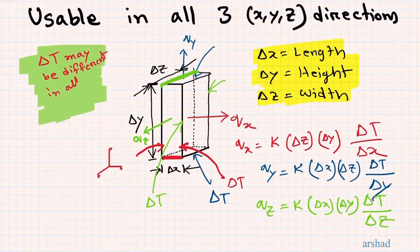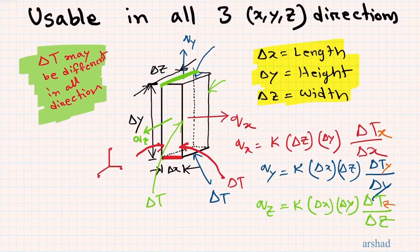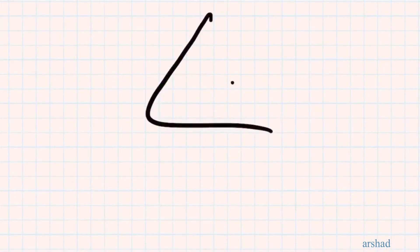In most real cases, the temperature difference in every direction will not be the same, so we use subscripts to distinguish them: Delta T_X, Delta T_Y, and Delta T_Z.